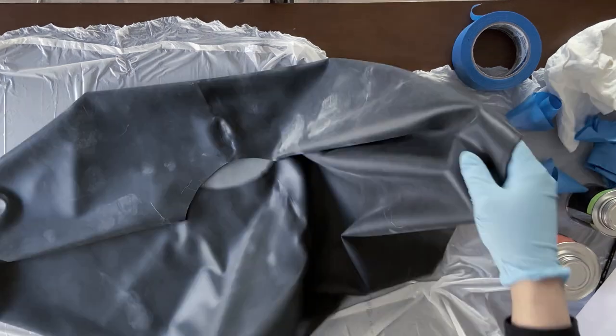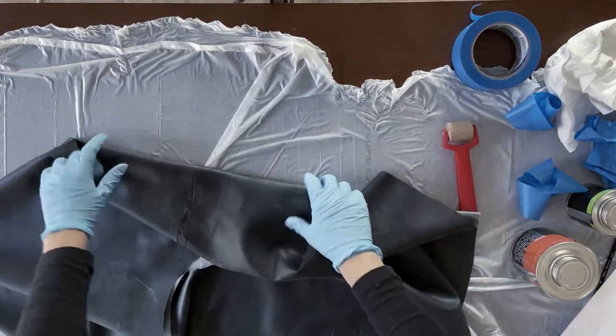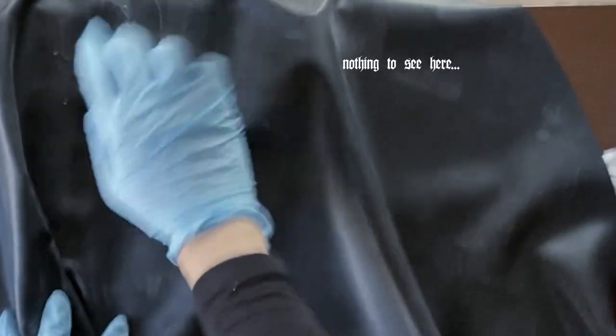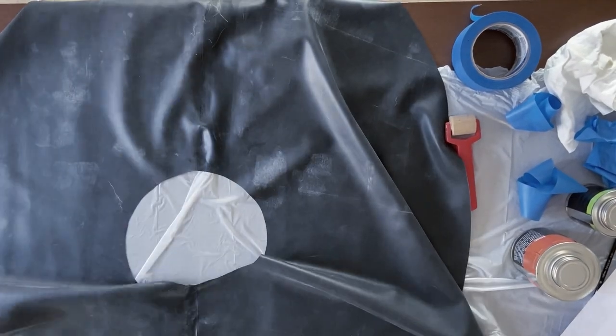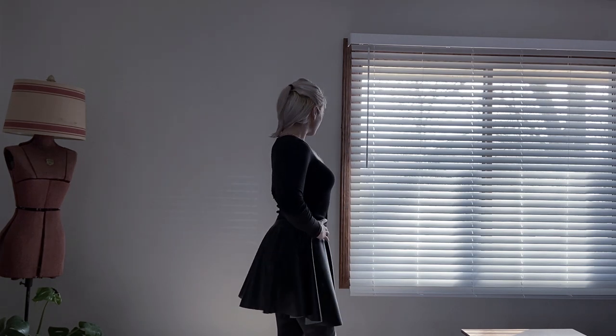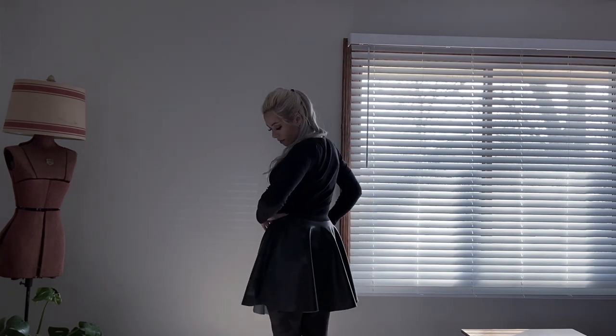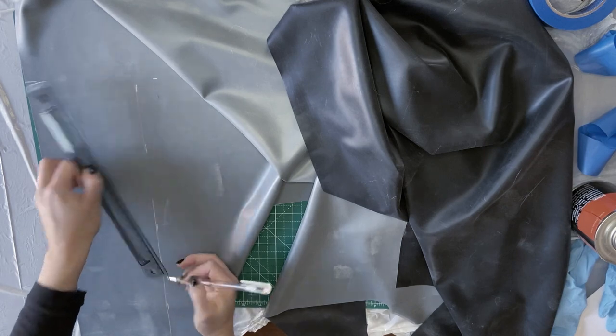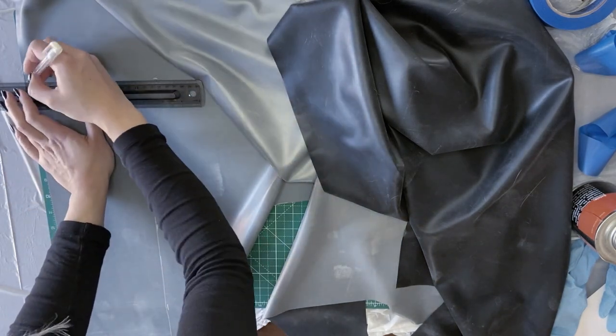But anyway this is how you would make a circle skirt and the same pattern applies to fabric skirts as well. So you can stop here or add a waistband if you want to just make a regular circle skirt but we're adding a high waistband to this so I'm measuring out a rectangle that is the width and length that I need and cut that out.